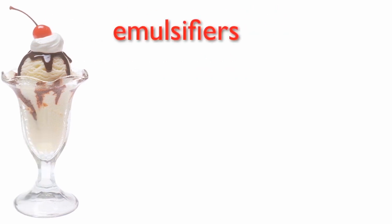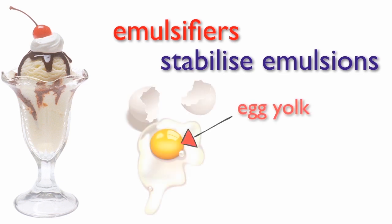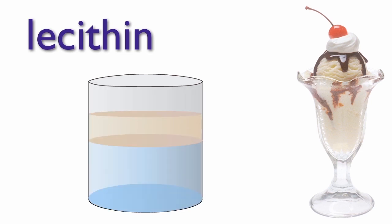When making ice cream, egg yolk is commonly added. The active emulsifier in egg yolk is called lecithin. Too little lecithin will cause the ice cream to separate, and too much will ruin its texture and flavor.